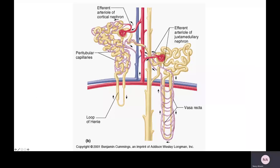This diagram shows the cortical nephrons and the juxtamedullary nephrons, as well as the vasa recta of the juxtamedullary nephrons. You'll notice that the loop of Henle in the juxtamedullary nephrons is longer.